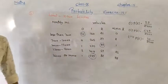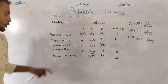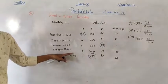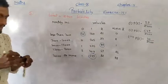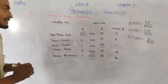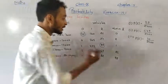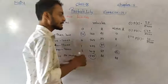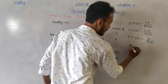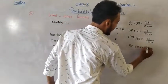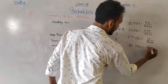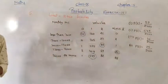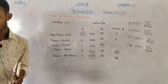Fourth sub-question: earning 13,000–16,000 and owning more than 2 vehicles. From the table, such families = 25. So probability = 25/2400.